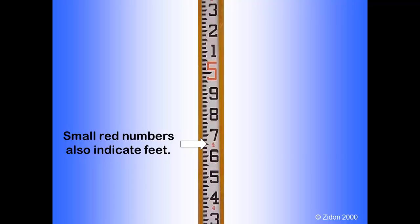Some rods have an occasional small red number that also indicates feet. If the rod is close to the instrument, you might not be able to see the large red numbers, so these smaller numbers are helpful to know the number of feet.